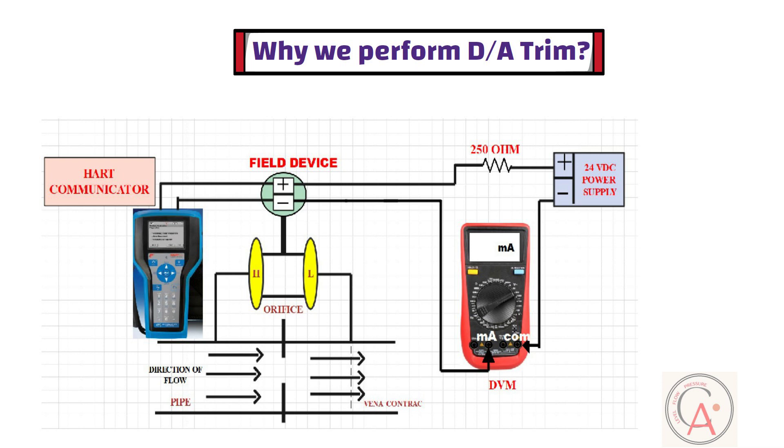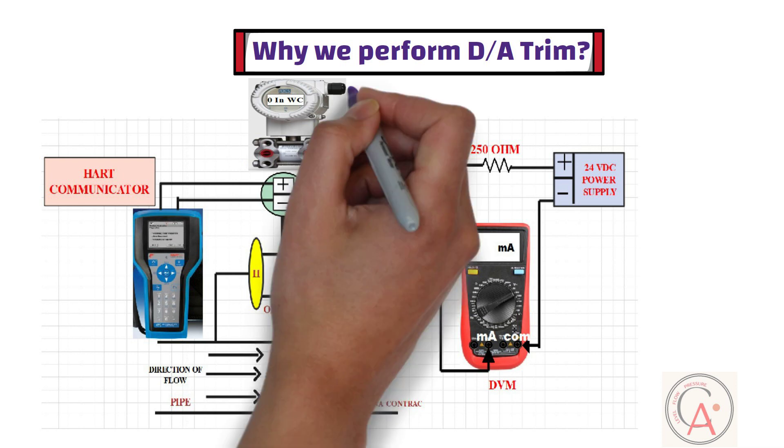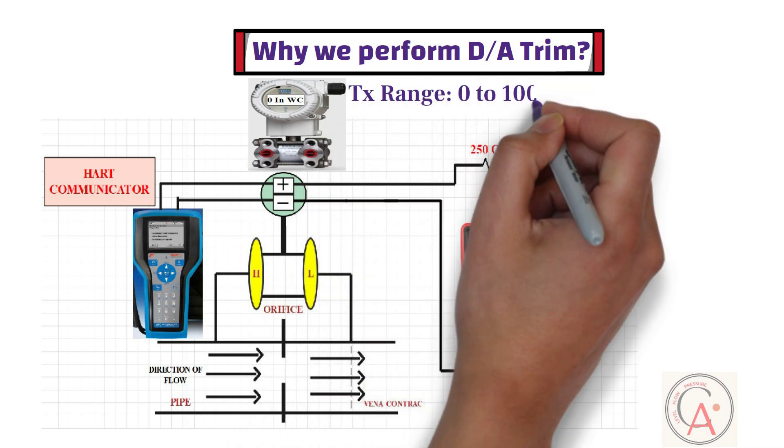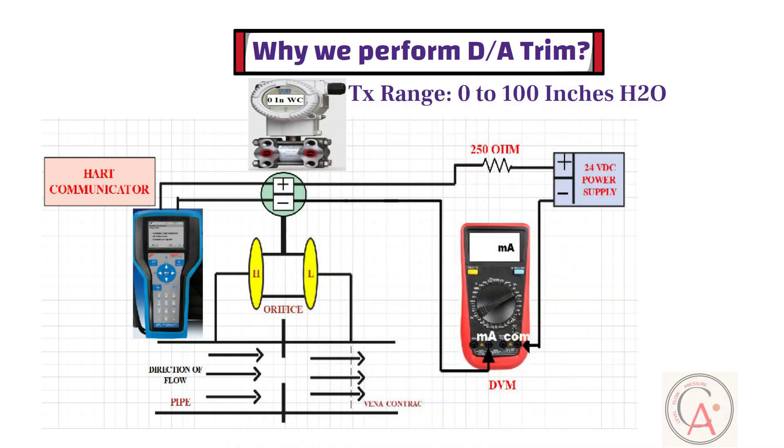Digital to analog trim needs to be performed when analog output value of transmitter is out of specified range. For example, if transmitter's range is 0 to 100 inches of H2O, and if transmitter gives 4.286 milliampere at 0 inches H2O pressure. In this case, digital to analog trim will be required to set milliampere output at 4 milliampere.